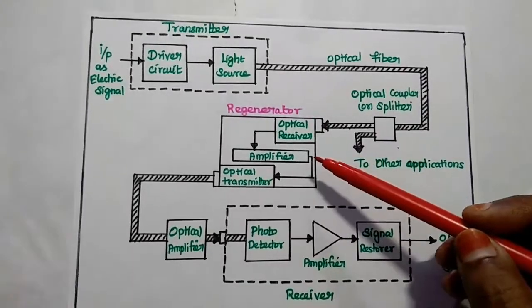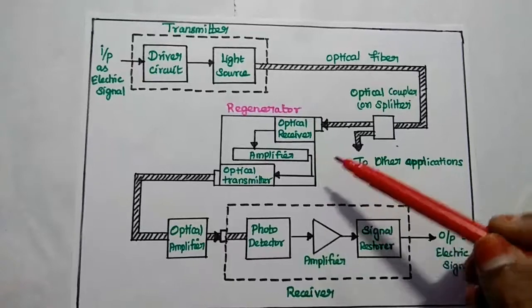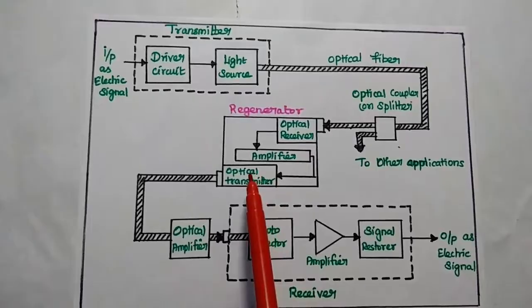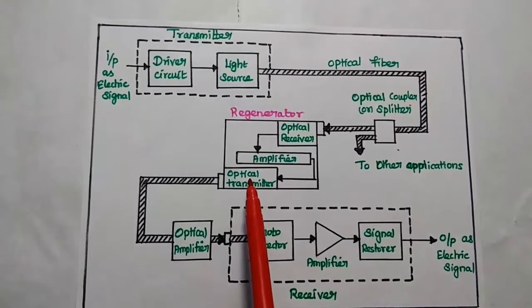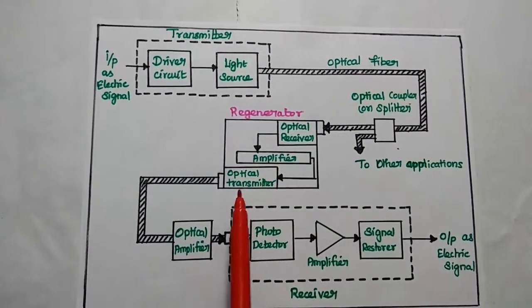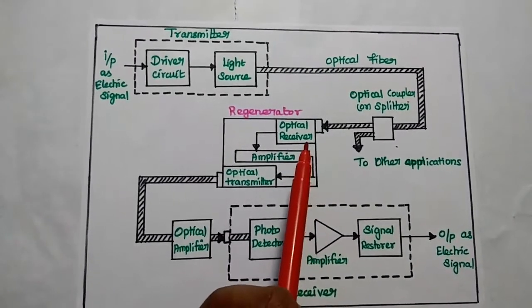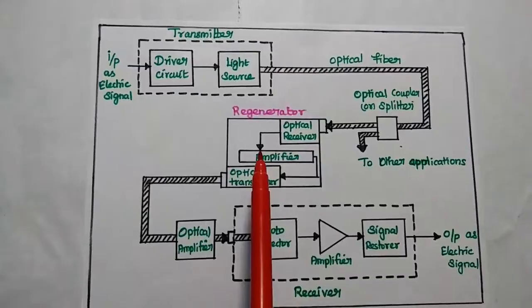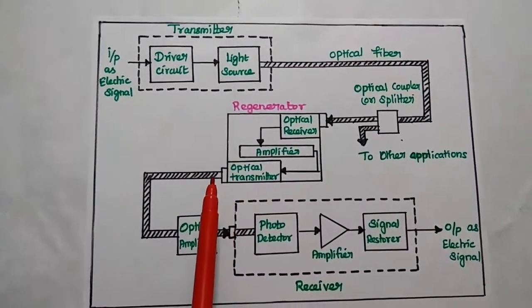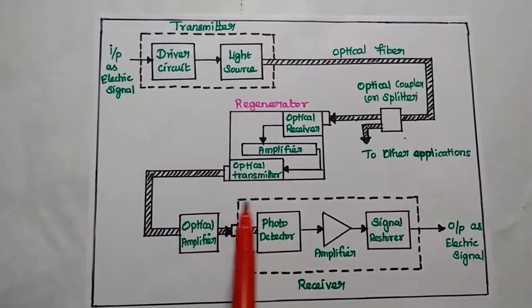The next component is the regenerator, which is a very important component in optical communication. It is used at a particular distance to strengthen the optical signal. In the regenerator, the optical receiver, amplifier, and optical transmitter circuits are used. The received optical signal is converted into an electrical signal, amplified, and then converted back into the optical signal, which is then transmitted through the optical fiber for the next particular distance.